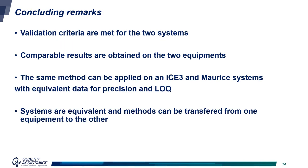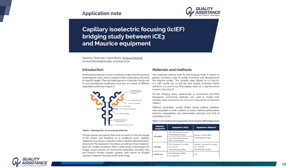To conclude, acceptance criteria are met for both systems individually, indicating that the method would be validated on each system. Furthermore, we obtained comparable results on the two systems — I3 and MORRIS — indicating that the same method can be applied on both systems, leading to equivalent precision and limit of quantitation. This means that methods can easily be transferred from one system to the other. This work is described and detailed in an application note that can be downloaded on our website.